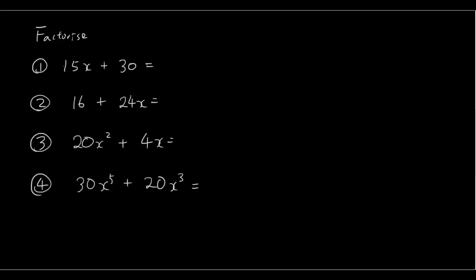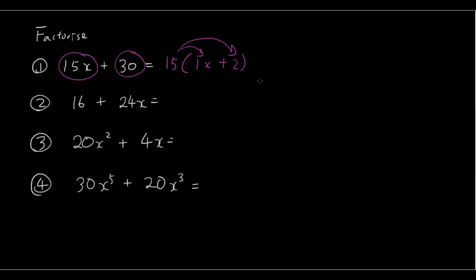So let's do the first one. We have 15x and 30 — 15 is the highest common factor for both: 15 times 1x is 15x, and 15 times 2 is 30. So therefore we have just factorized it. You don't have to write the arrows in your answer, so you can just rub them out.